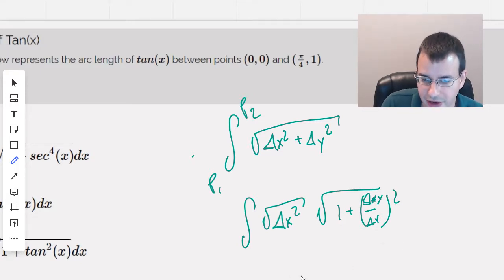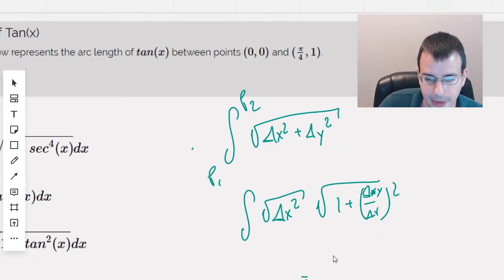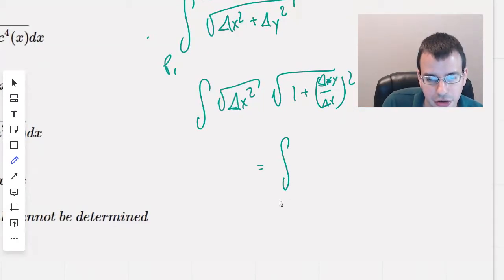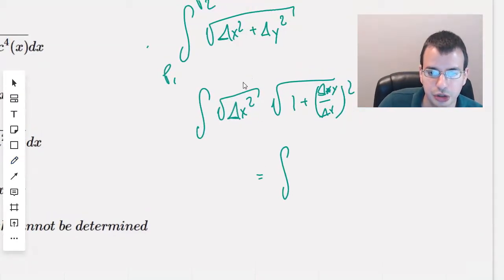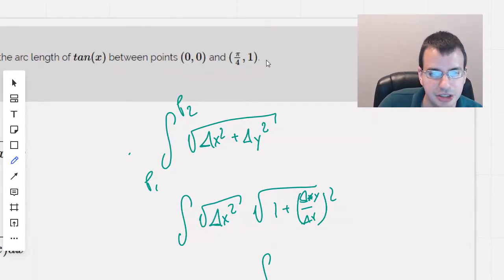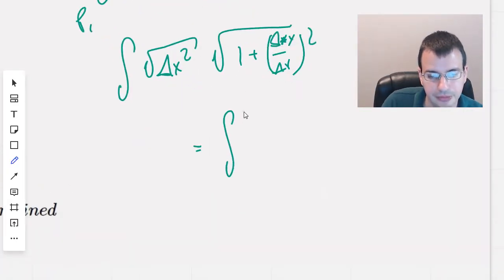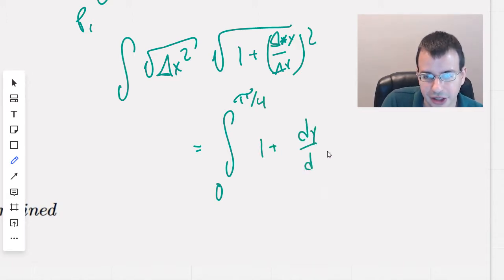And then we simplify this to integral, and I'm going to say that we're going to do x, so we'll go from 0 to π/4, 1 plus, and then I'm going to rewrite the delta y, delta x, dy/dx.